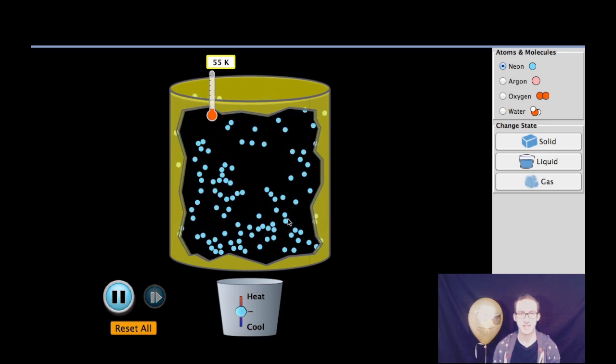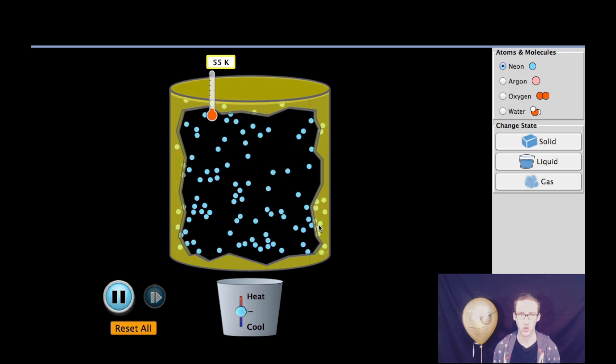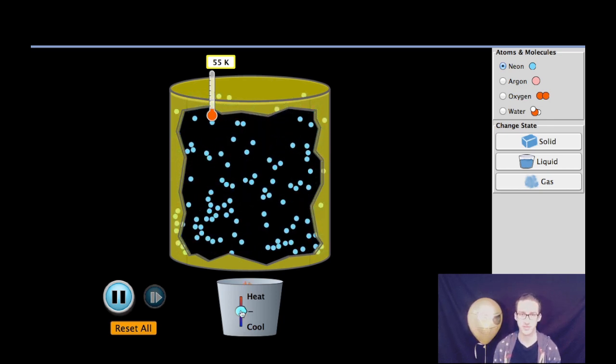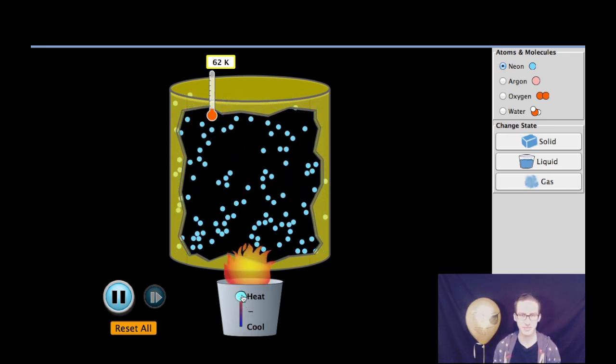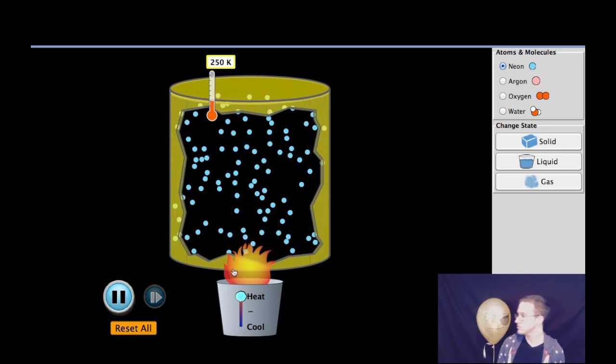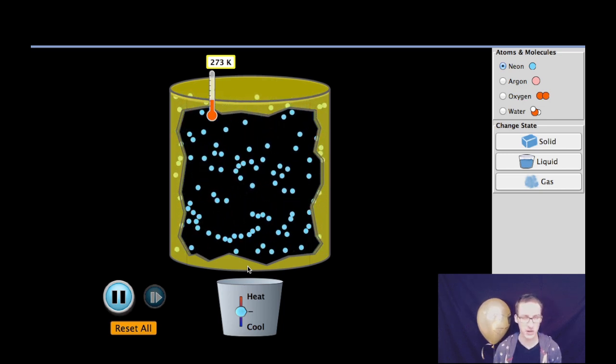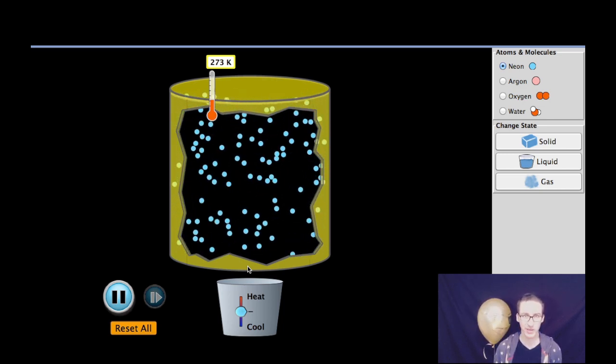So, as we go back to my sample of neon gas, we're currently at 55 Kelvin, which is pretty dang cold. But when we heat things up to say 273 Kelvin, notice the kinetic energy or the energy of motion of our particles has greatly increased.